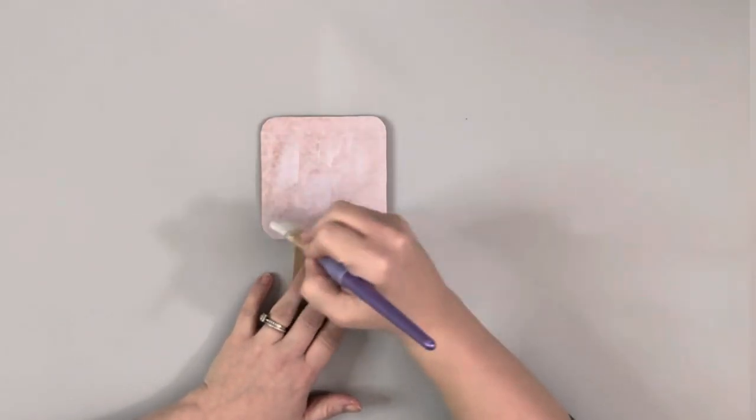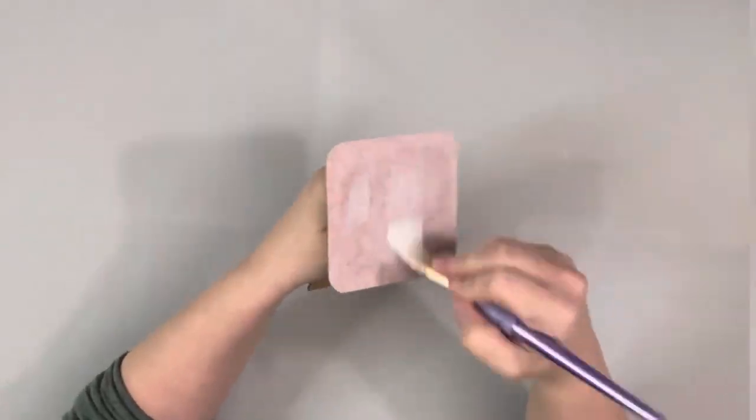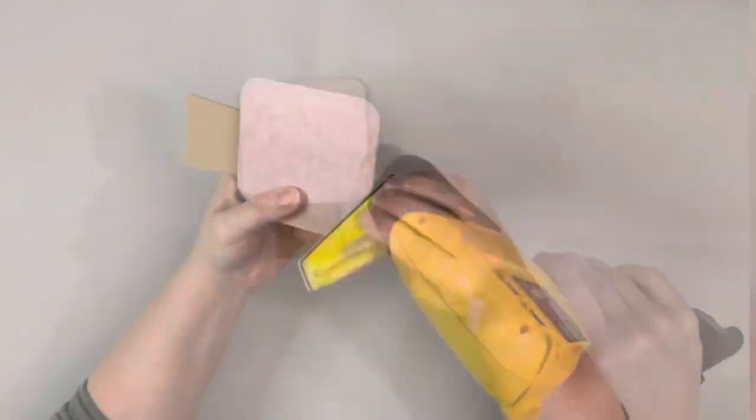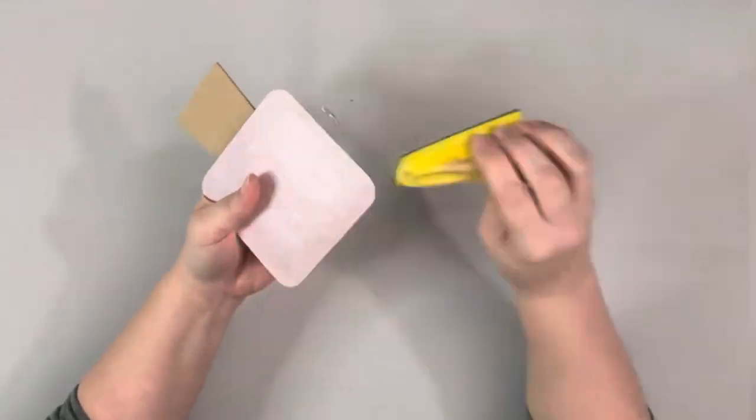After that layer was completely dry I did an outer layer on top of the scrapbook paper, again using my heating tool to dry it, and then I sanded off any excess paper.